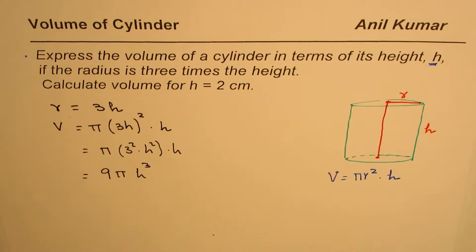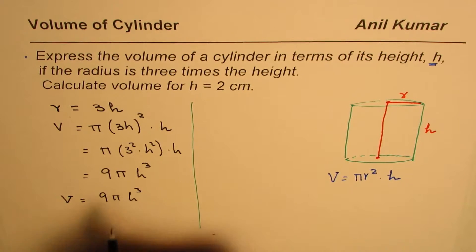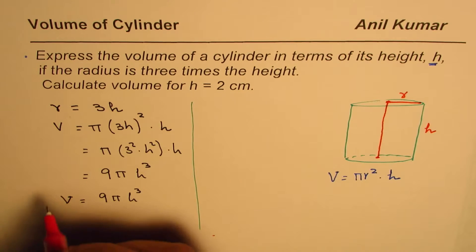So that is the formula which you get for volume in one variable. I hope the steps are absolutely clear. So let me write down here: V = 9πh³.